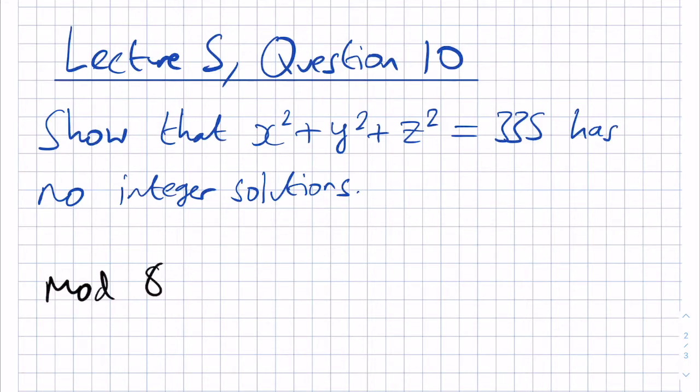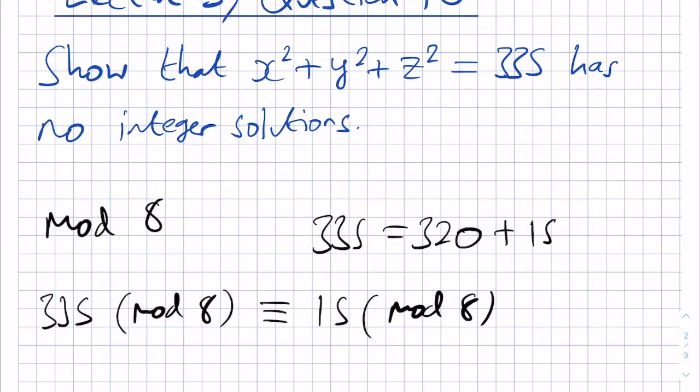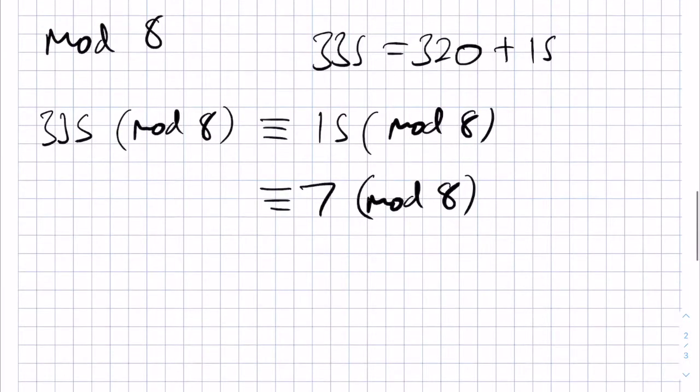So, if we proceed modulo 8 and later we'll discuss why this modulo is useful, then we should start by taking our equation modulo 8. On the right hand side we have 335 modulo 8, which is, because 335 is 320 plus 15 and 320 is a multiple of 8, this is 15 modulo 8 and then this is 7 after removing the 8 from 15. Therefore, in modulo notation, our equation above becomes x squared plus y squared plus z squared is congruent to 7 modulo 8.